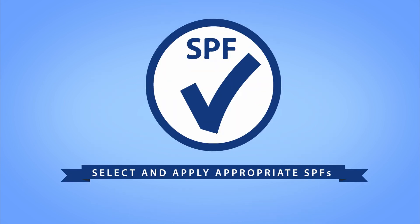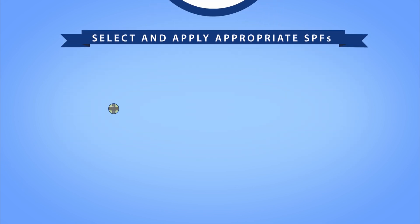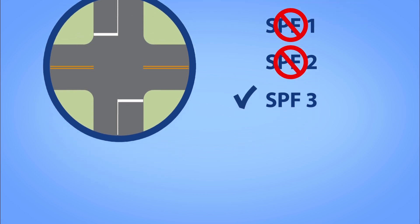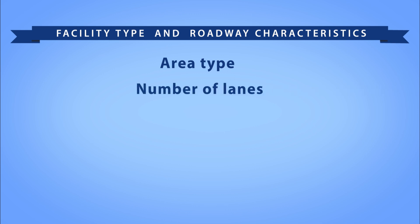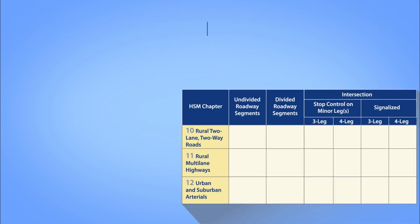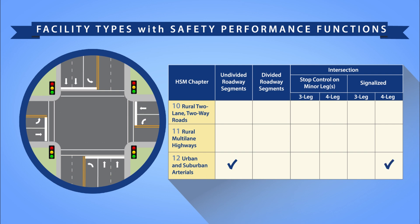The third step is to select and apply the appropriate SPFs. The HSM includes SPFs for various facility types, which you apply to the most basic unit of analysis — roadway segments and/or intersections. It is important to understand the applicability of the SPFs to select those most appropriate to your scenario of interest. You must consider the facility type and associated roadway characteristics such as area type, number of lanes, median type, traffic control, and number of intersection approaches. For example, if your project is an urban, four-legged, signalized intersection, you should select an SPF that applies to that type of intersection.